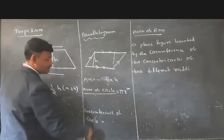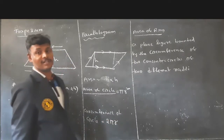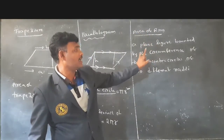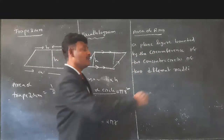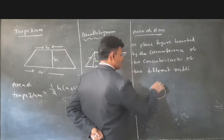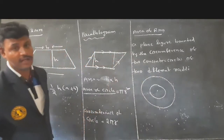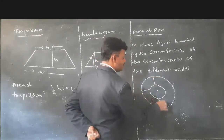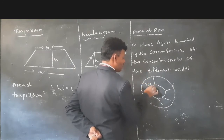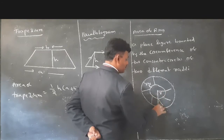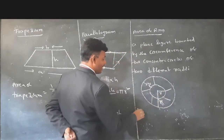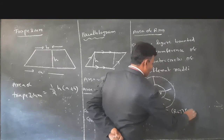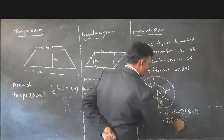Next, a special topic: the ring. A ring is a plane figure bounded by the circumference of two concentric circles — circles that have the same center but different radii. The area between two concentric circles is called a ring. Let the inner radius be R and outer radius be capital R. The area of a ring is pi into (R plus r) into (R minus r), which equals pi into (R square minus r square).